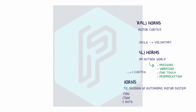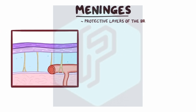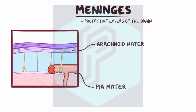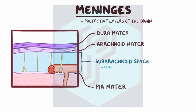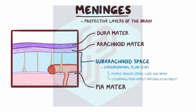Now, zooming in, the brain and spinal cord are covered by the meninges, which are three protective layers. The inner layer is the pia mater, the middle layer is the arachnoid mater, and the outer layer is the dura mater. The pia and arachnoid maters form the subarachnoid space, which houses the cerebrospinal fluid, or CSF. CSF is a clear, watery liquid that is pumped around the spinal cord and brain, cushioning them from impact and bathing them in nutrients.